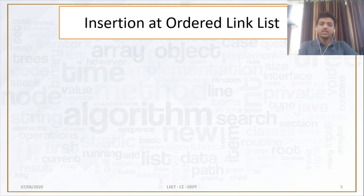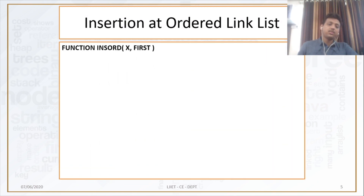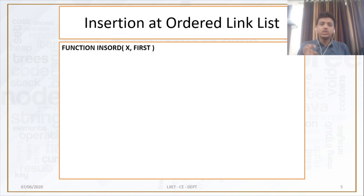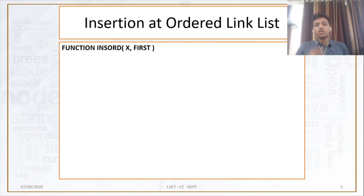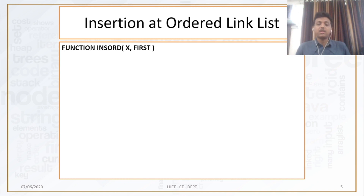Insertion at ordered linked list. The function is insord(x, first). In any type of insertion in linked list, we need to return the address of the first node of the list. So the return type is a function, not a procedure. insord represents insertion in ordered linked list. x represents the value and first is the pointer which points to the first node of the list.